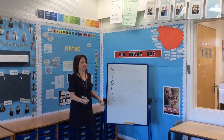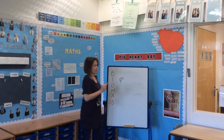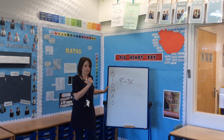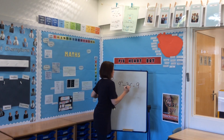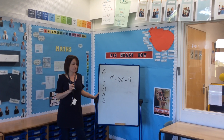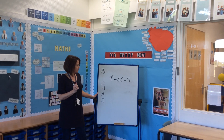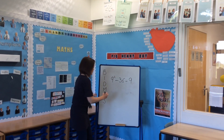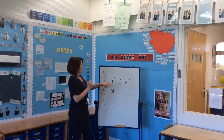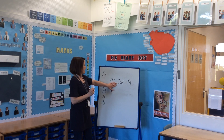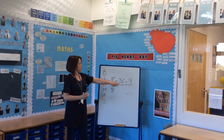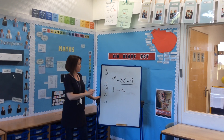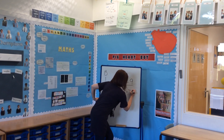The last one to try: 9 squared, take away 36, divided by 9. There are no brackets, so indices is first — 9 squared is 81. Subtraction is right down the order, so we jump to division: 36 divided by 9 is 4. So we get 81 take away 4, which gives us 77.